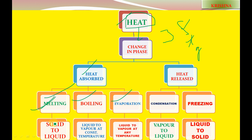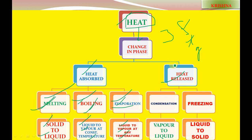Melting is a phase change from solid to liquid. Boiling is a phase change from liquid to vapor at constant temperature. Evaporation is a phase change from liquid to vapor at any temperature — there is a difference between boiling and evaporation. When heat is released, the phase changes are condensation and freezing. Condensation is vapor to liquid and freezing is liquid to solid.